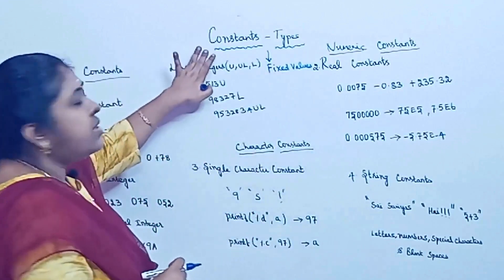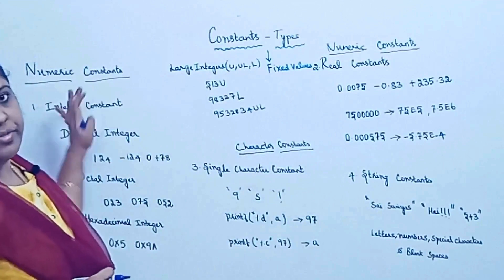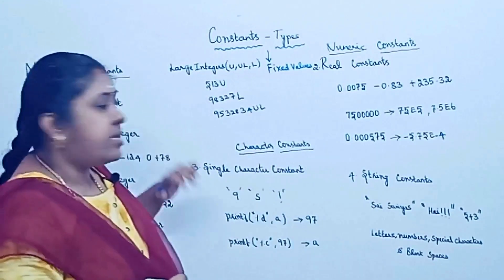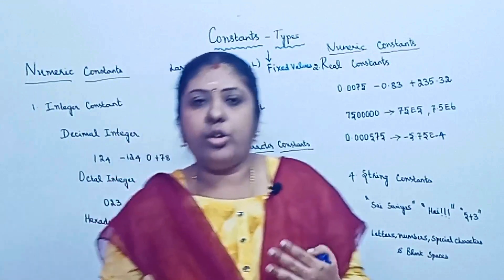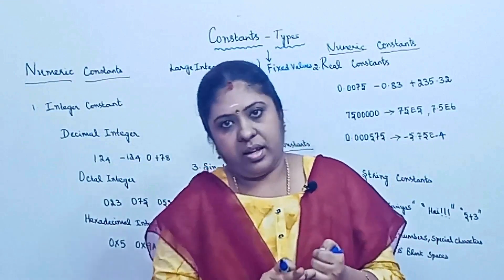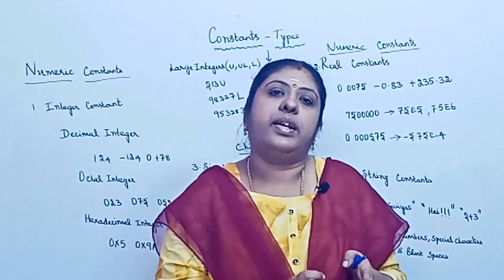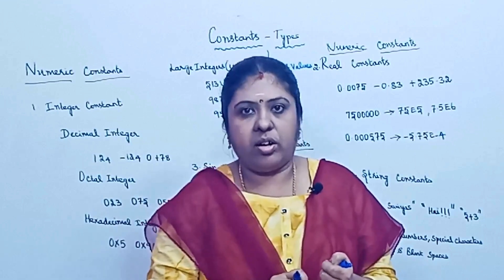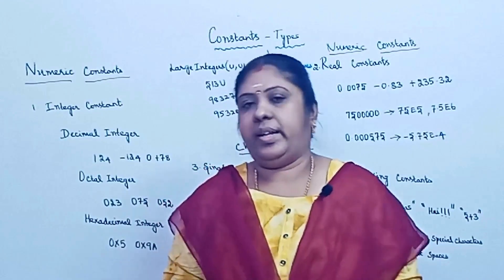The constant types refer to two major divisions: numeric constants and character constants. Within numeric constants, it consists of integer constants and real constants. Within character constants, it consists of single character constants and string constants. We will discuss each one in detail.